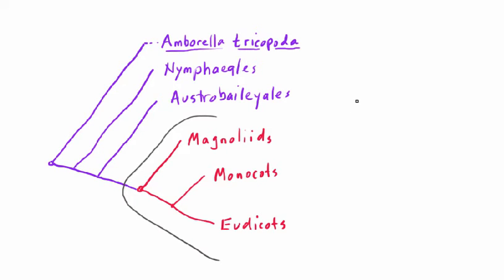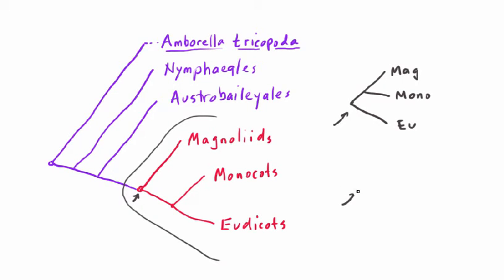In a different possibility, we could have had the Magnoliids not being in the basal position — so this might be the common ancestor to the three major taxa of mesangiosperms. We could have had the Magnoliids as being actually more closely related to the Monocots, with the Eudicots in the most basal position. Or we could have had the Magnoliids and the Eudicots as sister taxa, with the Monocots on their own.